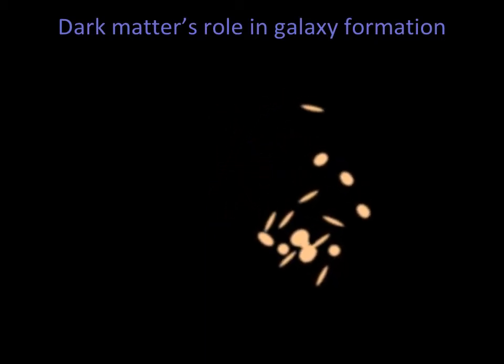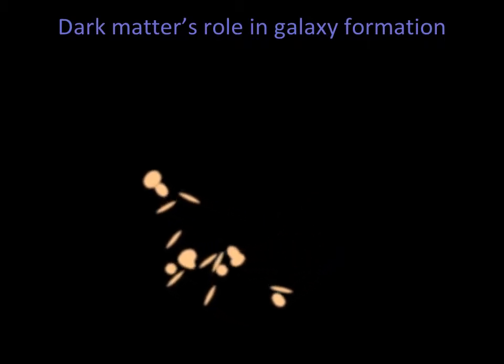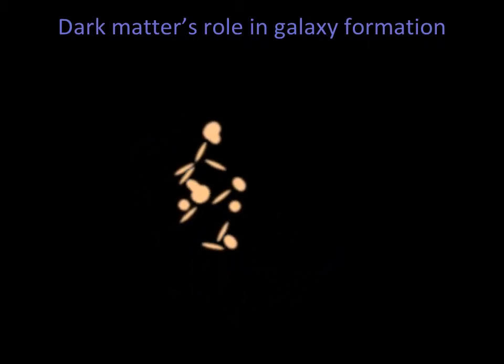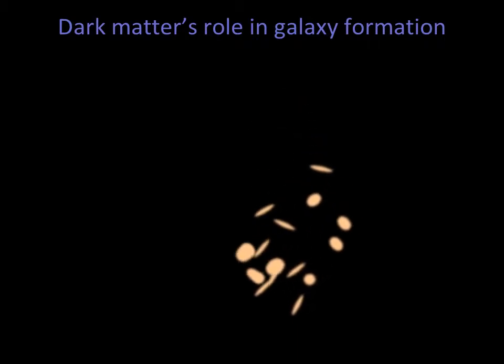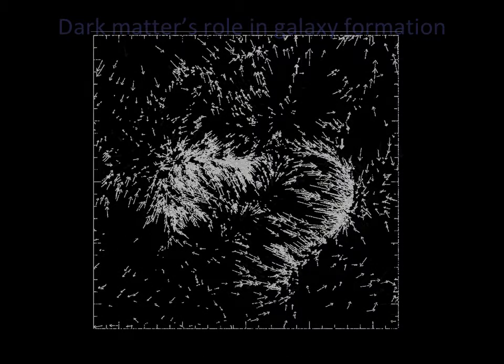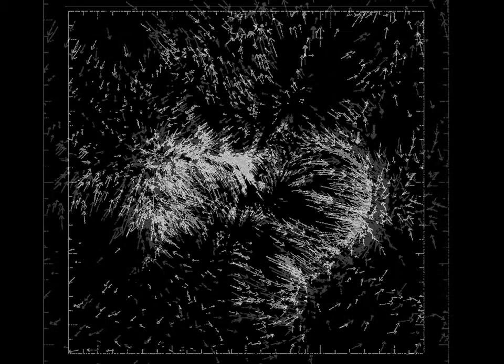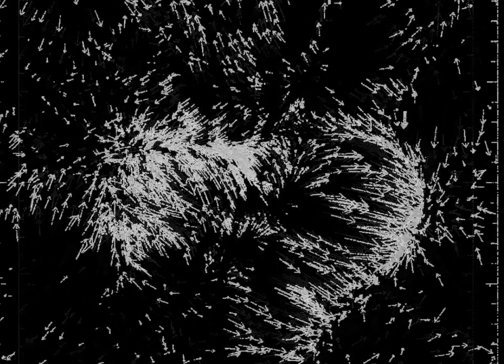The galaxies ultimately fall back inward and start orbiting each other with random orientations, much like the stars in the halo of our galaxy. Some galaxy clusters apparently have not yet finished forming — their enormous gravity is still drawing in new galaxies. For example, the Virgo cluster of galaxies appears to be drawing in the Milky Way and other galaxies of the local group.